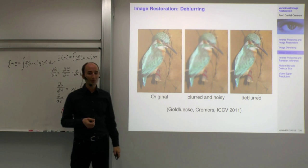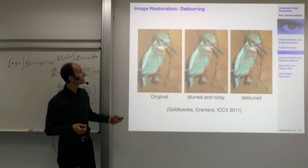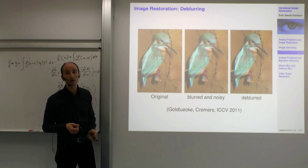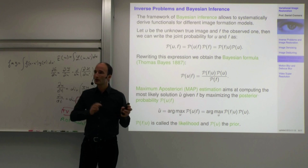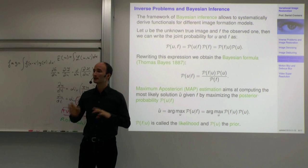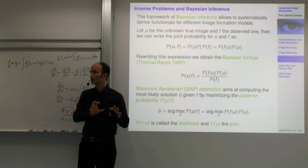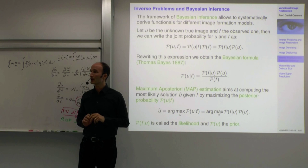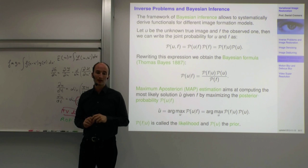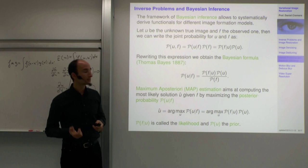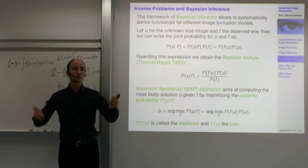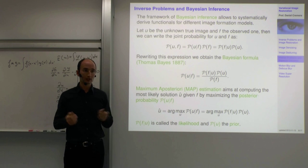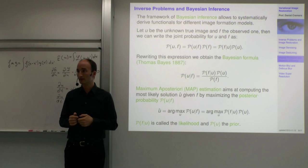So these are examples of inverse problems — denoising and the deblurring example. There is always a certain cost function that allows us to solve the problem. The question is: where do these cost functions come from? What I want to discuss now is a statistical framework that allows us to derive an appropriate cost function for a certain problem.